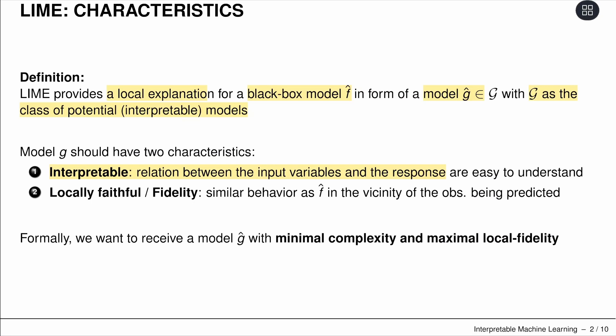And it should be faithful, but not over the entire model, but locally faithful. It should have a similar behavior as the original model F hat in the vicinity, the neighborhood of observation x being predicted. Formally, you want to receive a model G hat with minimal complexity in a way that's interpretable and maximal local fidelity.